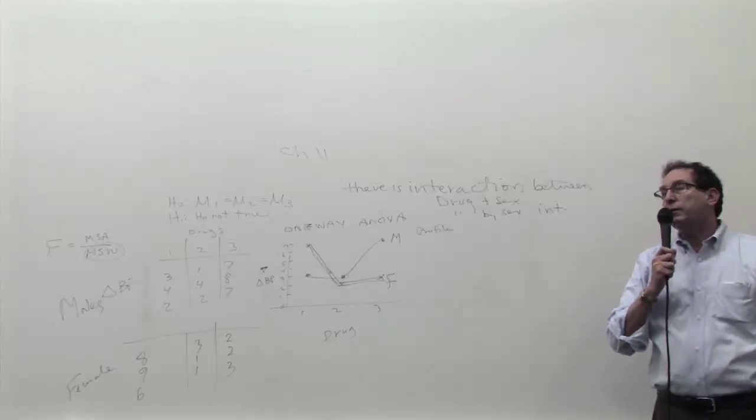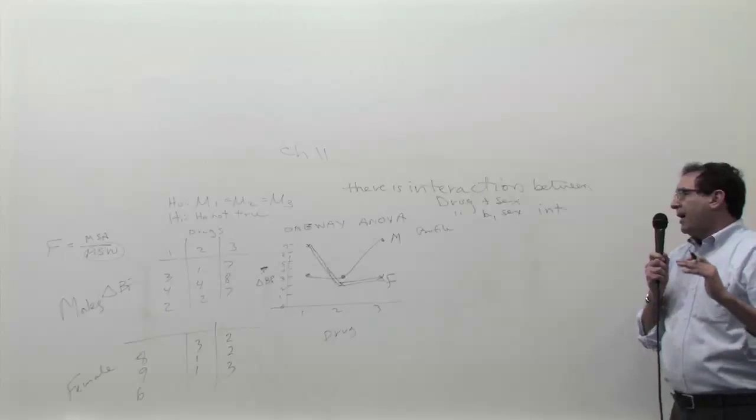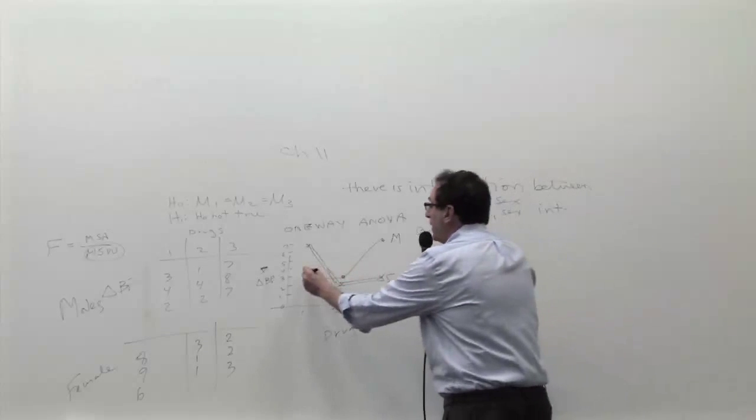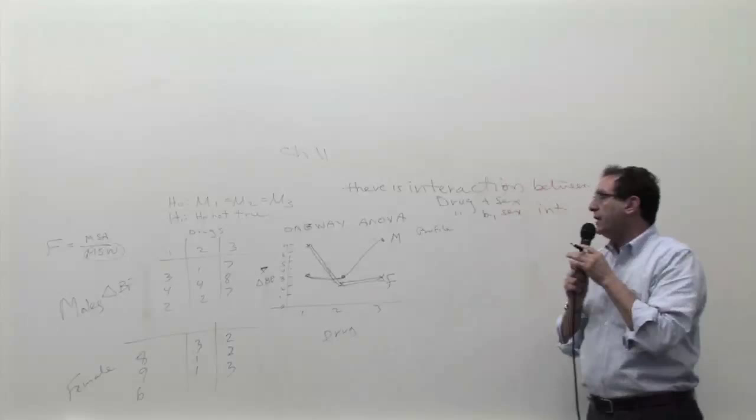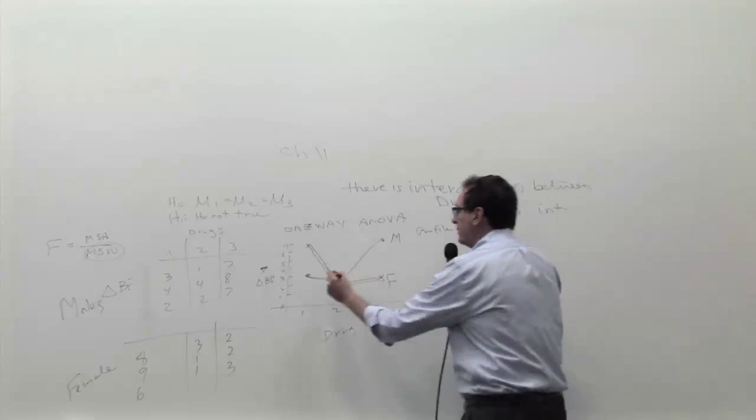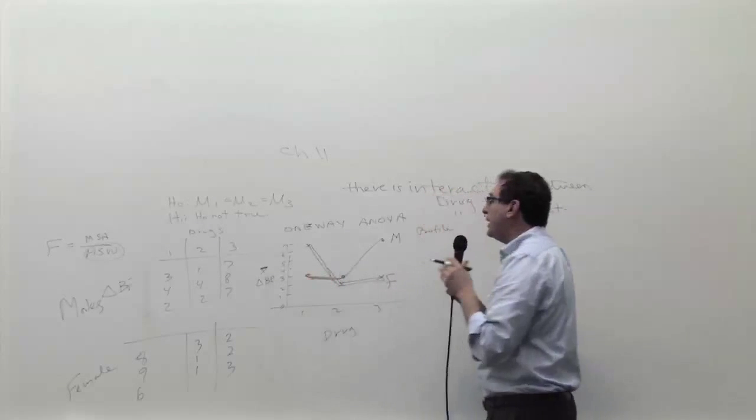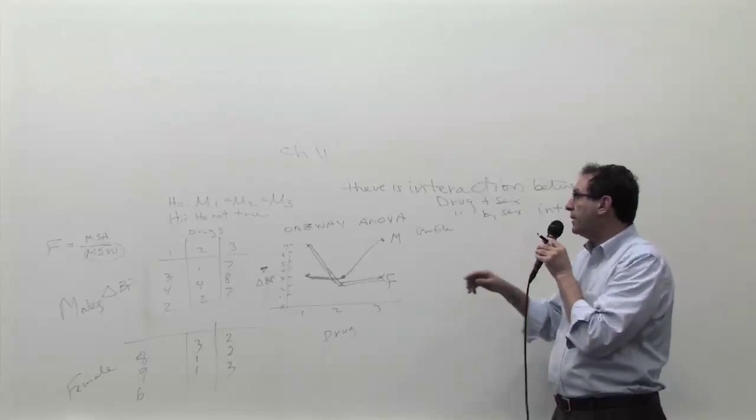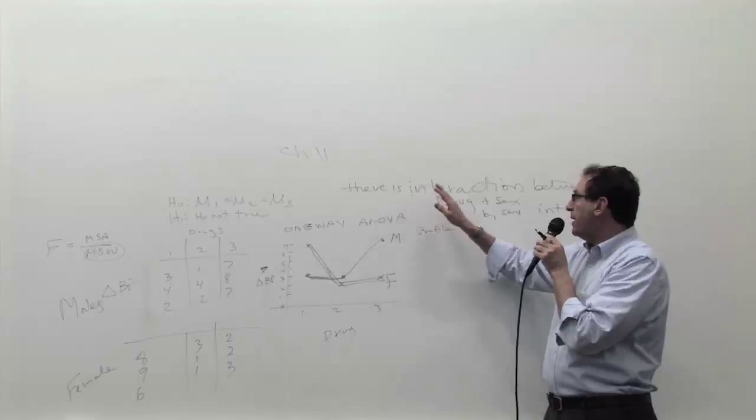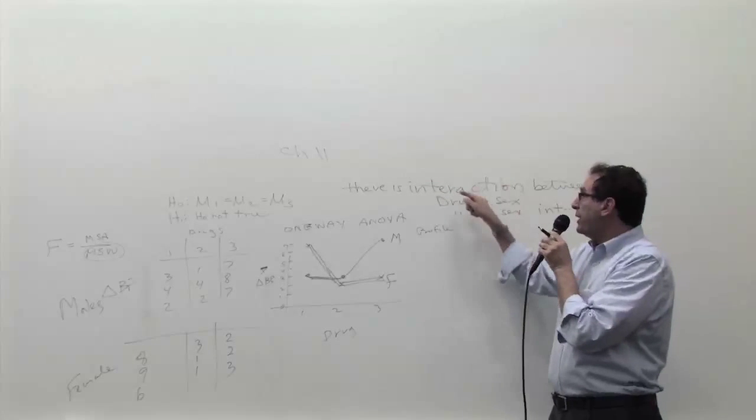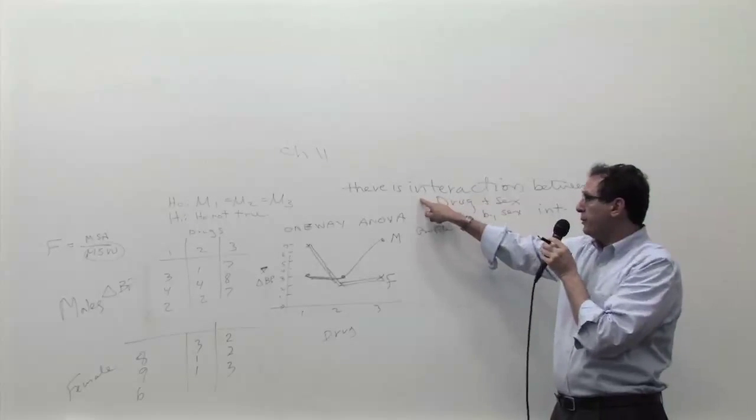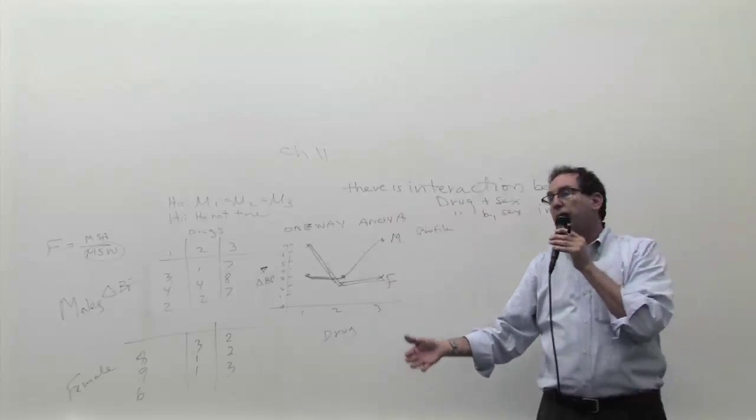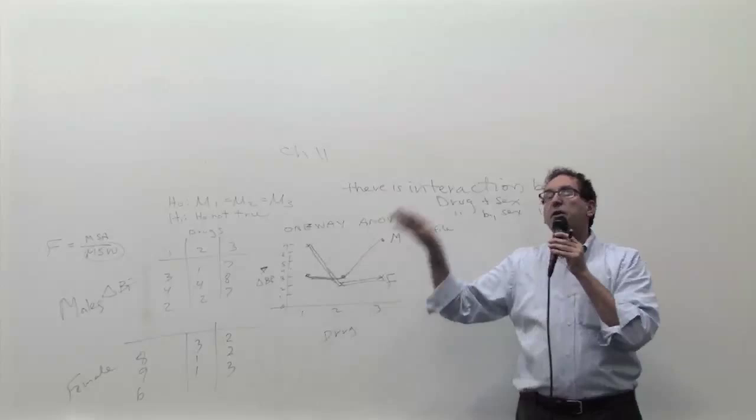But I'm not going to hold you responsible for doing those calculations. What I will hold you responsible for is to look at a picture. Now, in this case, would you say there's interaction? And the answer is yes, because it shows that you can't make a cross-the-board statement. If you can't make a cross-the-board statement that drug number three is better for everybody, then you have interaction. In other words, when things are more complicated, there's interaction. So can somebody jump to the conclusion I'm trying to get to? What would the picture look like when there's no interaction?